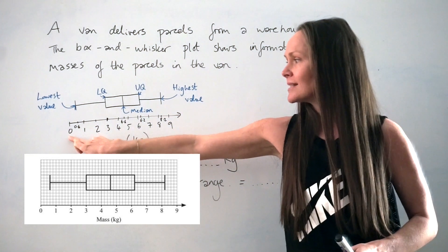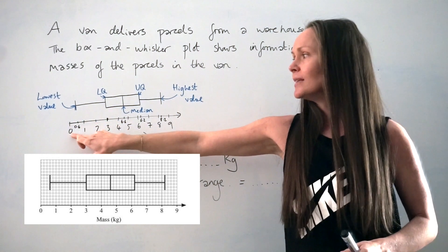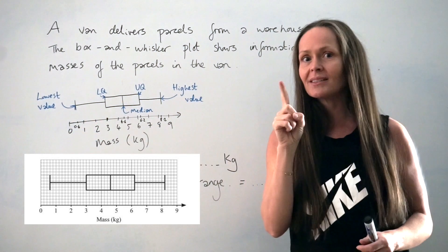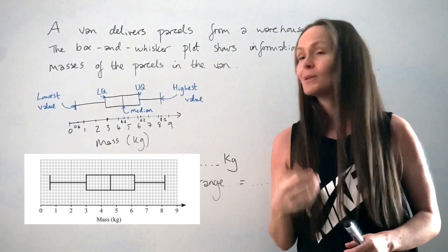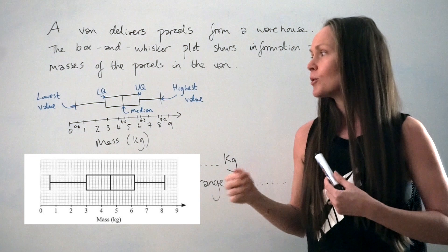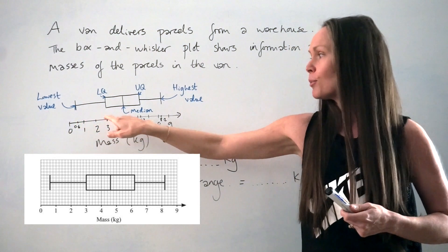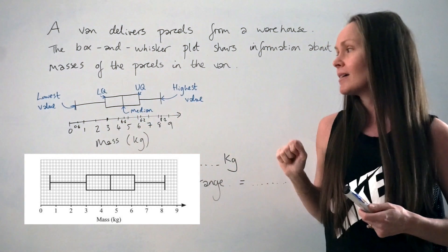Because from 0 to 1 there are five little squares, you need to divide one unit by five little squares, which gives you 0.2. So one divided by five is 0.2, so each little square is worth 0.2 along this line.